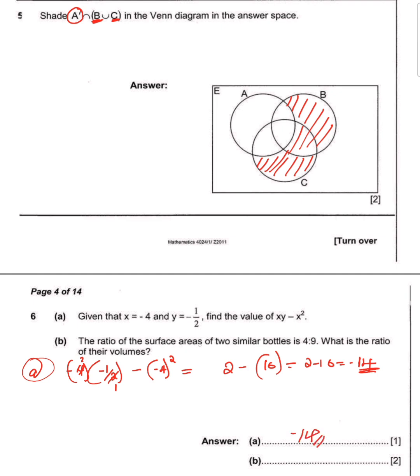The ratio of the surface areas of two similar bottles is 4:9. What is the ratio of their volumes? Careful here. I repeat, careful - the ratio of the surface areas. So this is the ratio of areas.